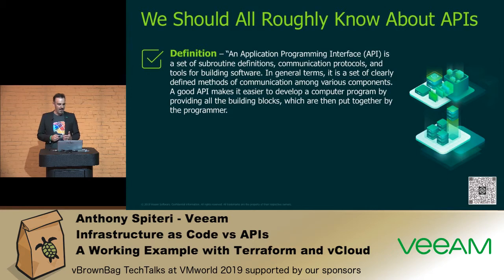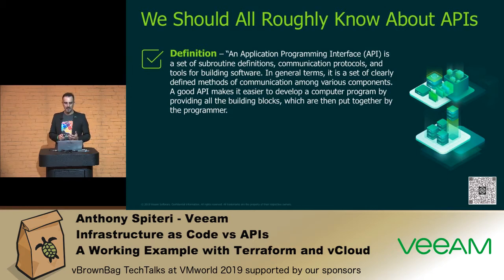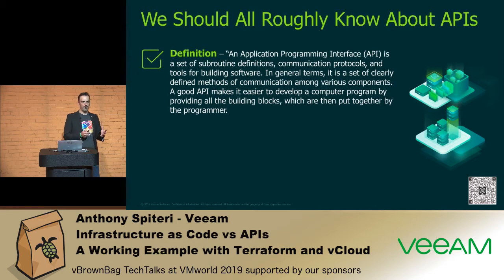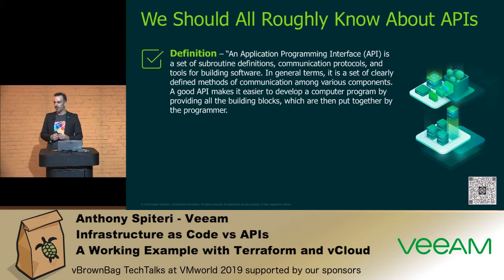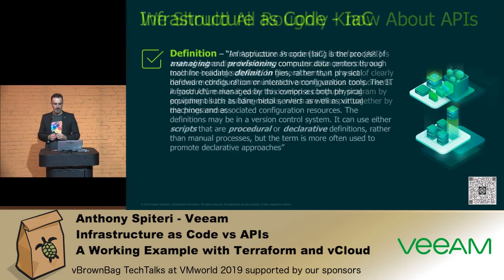It's basically a set of subroutine definitions and communication protocols used to build software. The key here is that a good API makes it easy to develop a computer program by providing all the building blocks. And typically any piece of software written today is going to have an API of some sort.